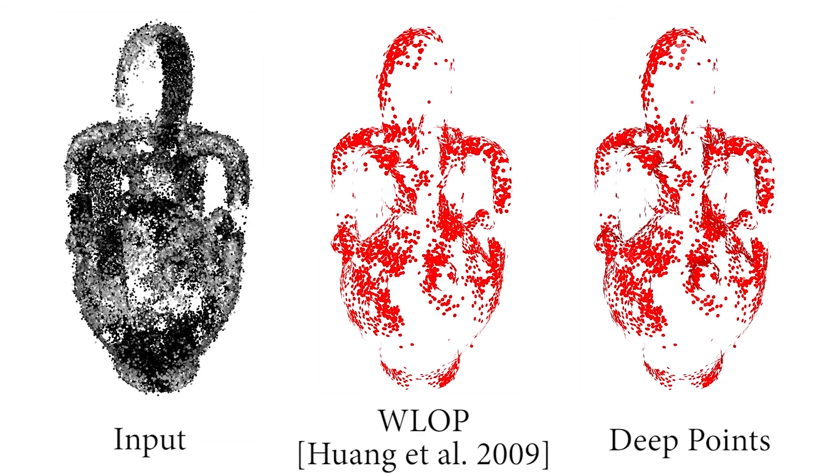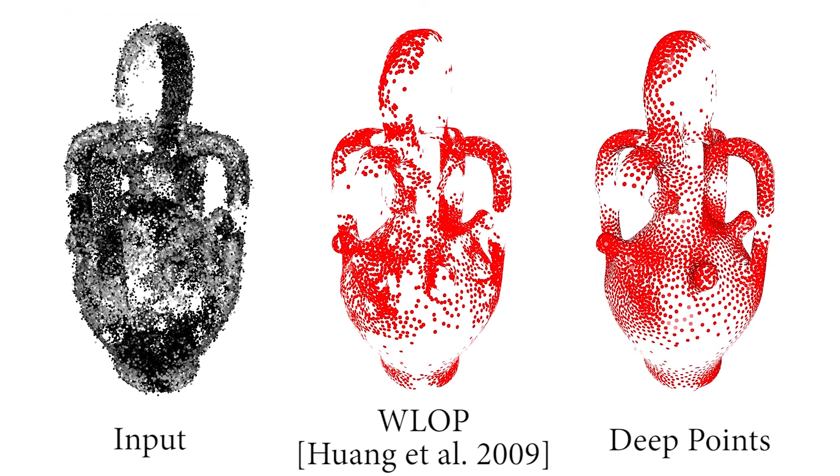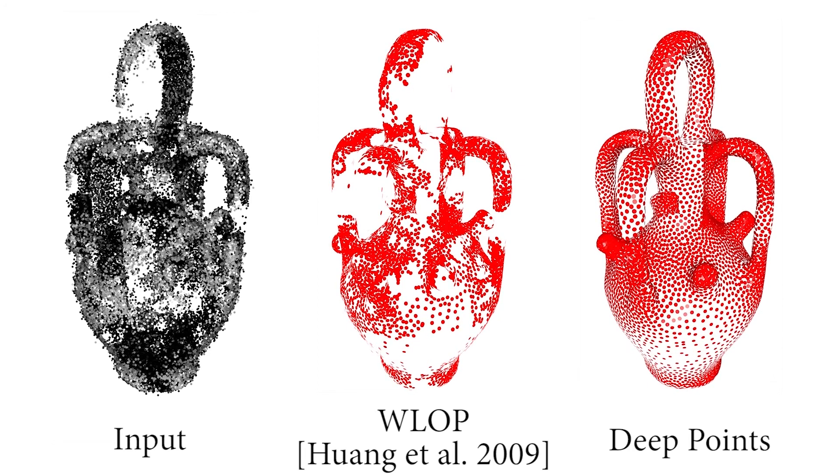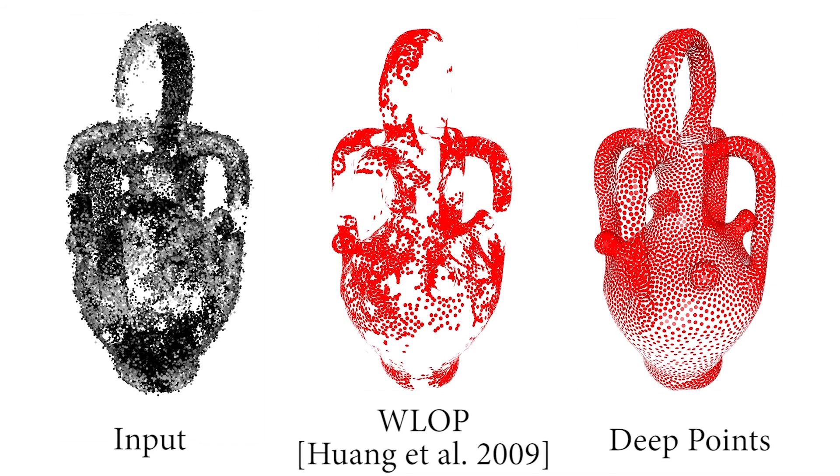The strength of this new representation stems from the fact that it is comprised of both local and non-local geometric information, which we demonstrate to be powerful in point cloud consolidation and shape completion.